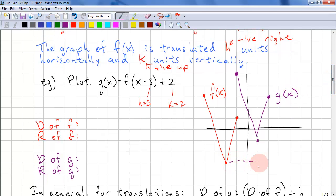And we have h is equal to 3, k is equal to 2. The domain and range are also translated.